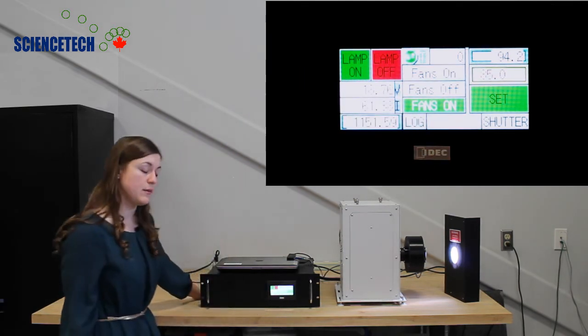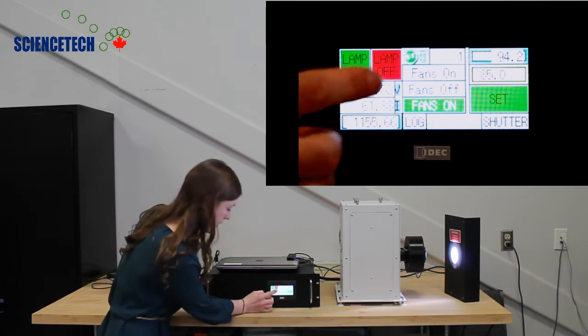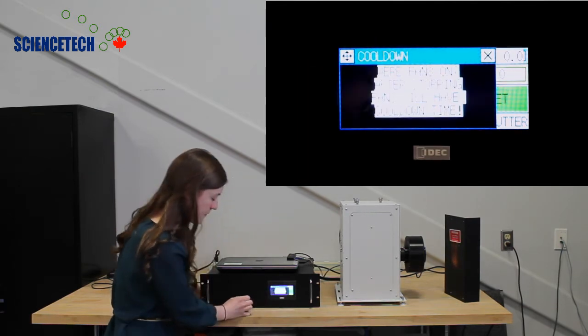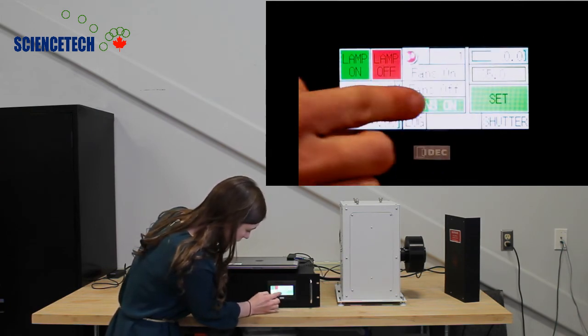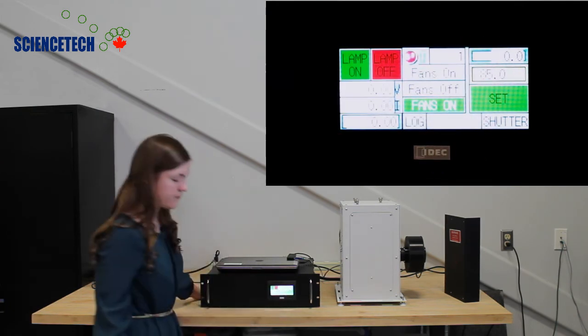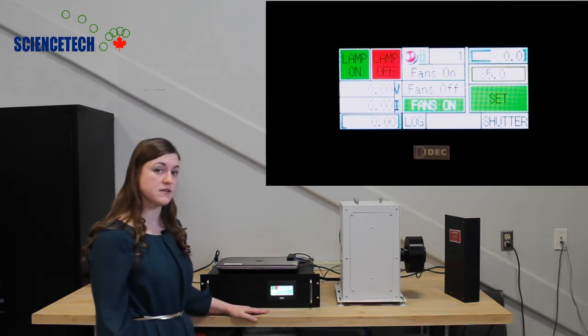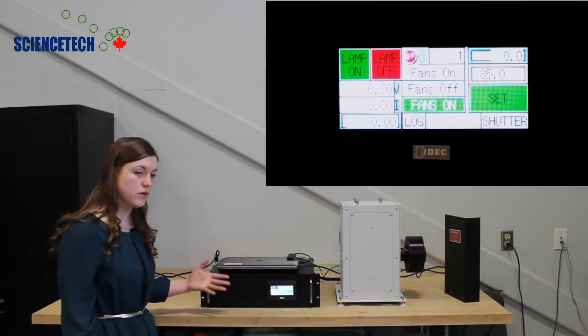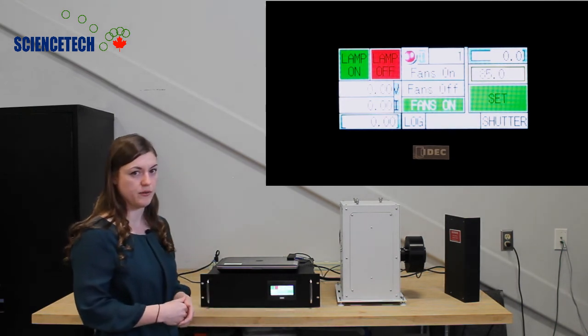To turn the lamp off, first start by hitting the lamp off button. It'll prompt you about the fans. So just hit fans off from there and it will turn the fans off. Notice that the monitor still says fans on. That's because it's going through its programmed cool-down period, and the fans will turn off when that period has elapsed.